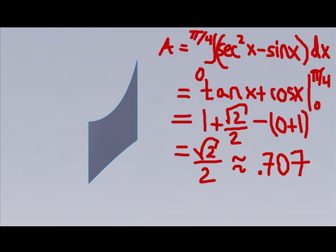First, using the upper limit of pi over 4, tangent of pi over 4 equals 1. Cosine of pi over 4 equals square root of 2 divided by 2. Then I subtract the lower limit, 0. Tangent of 0 equals 0. Cosine of 0 equals 1.